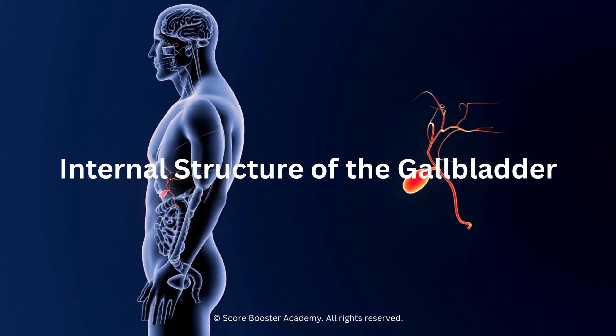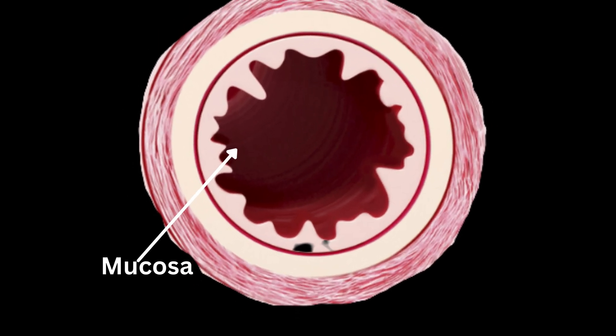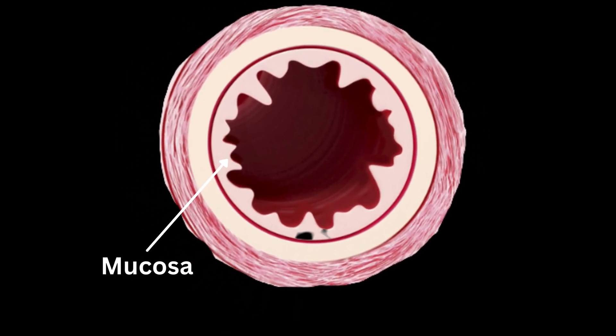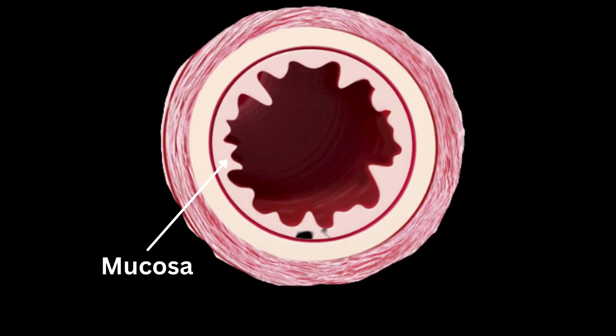The innermost layer of the gallbladder is the mucosa. It consists of specialized cells that absorb water and electrolytes from bile, concentrating it and making it more potent for digestion. Surrounding the mucosa is a layer of smooth muscle fibers, known as the muscular layer.